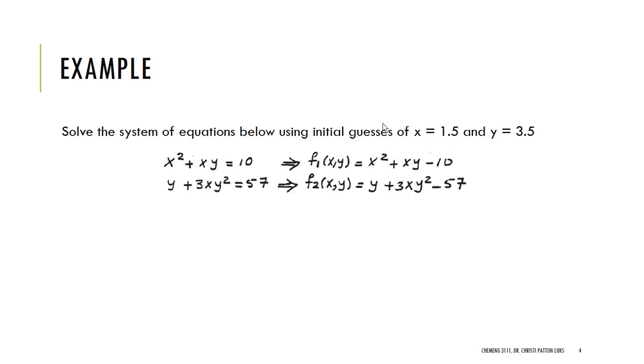I'm going to use this and these equations to solve this with Newton-Raphson technique. So first we're going to rearrange our functions so that I have them into the form something that would be equal to 0. So in this case, x squared plus xy equals 10 becomes x squared plus xy minus 10 equals 0. And y plus 3xy squared equals 57 becomes y plus 3xy squared minus 57 equals 0.